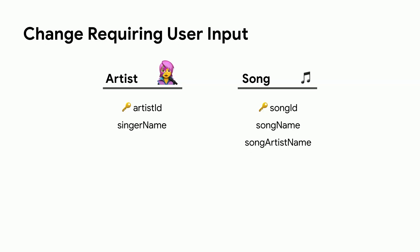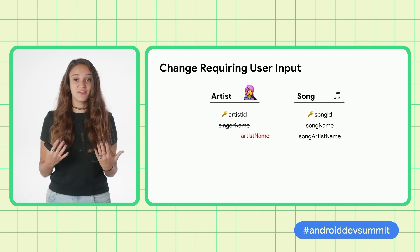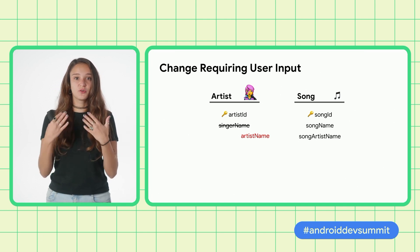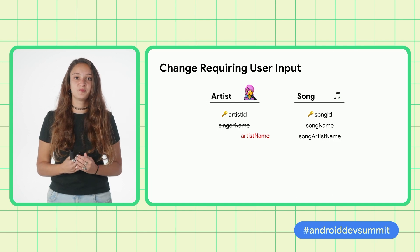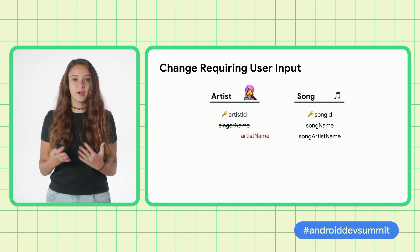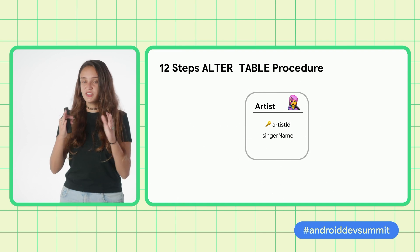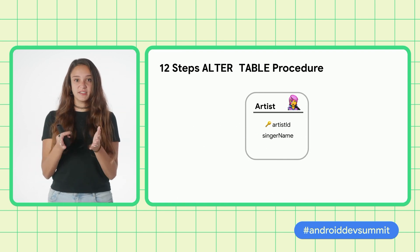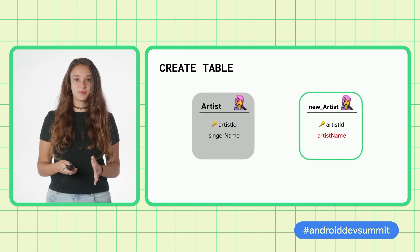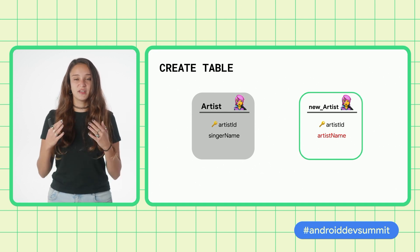Now, let's go one step further and say we want to change one of the fields in the artist table, renaming singer name to artist name. While this may seem like something trivial, SQLite doesn't have an API for this, so we will need to go through the 12-step generalized alter table procedure. Using manual migrations, this would mean you would have to manually write and execute all the SQL statements associated with the 12 steps. You would take the table you want to perform the change on, then create a table that has the structure you want after the change, where the singer name column has been renamed to artist name.